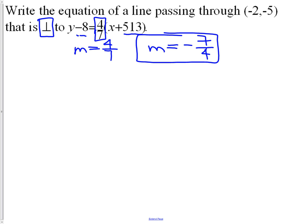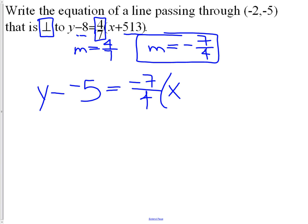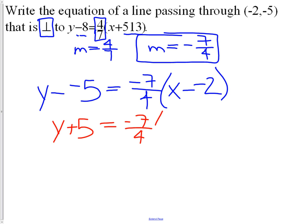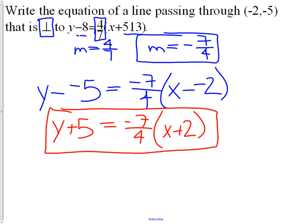Now we simply write the equation in point-slope form: y minus y1 equals m times (x minus x1). We should clean this up — double negatives make a positive on both sides. We've now written the equation of a line. This lesson may have gone a little quick, so feel free to watch it again. Make sure your notes are completely filled out, and if you have any questions, bring them to class and I'll help you out. Thank you.